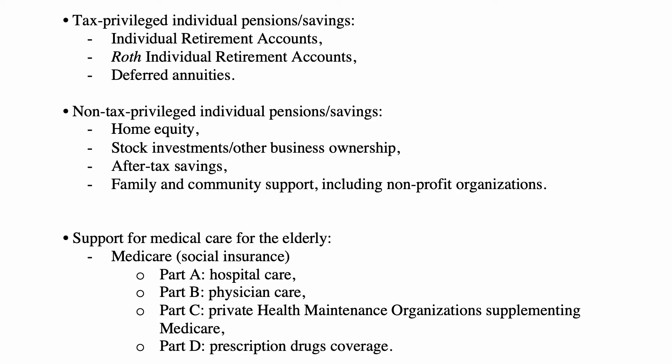There is also support for medical care for the elderly in the U.S. The main social insurance system is called Medicare: Part A covers hospital care, Part B covers physician care, Part C covers private health maintenance organizations supplementing Medicare, and Part D covers prescription drugs, which is relatively new — started around 2005. Medicare itself was created in 1965.